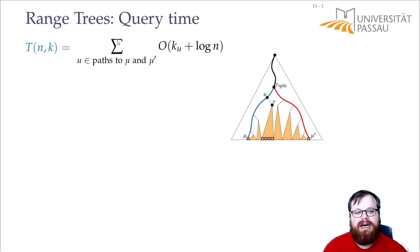Let's try to sum this up. We have to sum up all these ku's, and we have to sum up all these log n's. All these ku's together, that's the points that we report in the subtree, so all together that's just the number of points that we want to report.